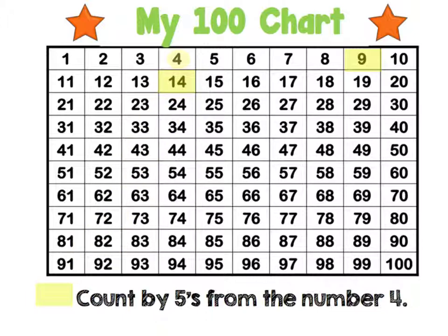Now that I'm at number 14, I want to count how many spaces? 5 more. So I'll go from 14 and count over 5 more: 1, 2, 3, 4, 5. So from 14 plus 5 is equal to 19. I'm going to put my highlighter right here.